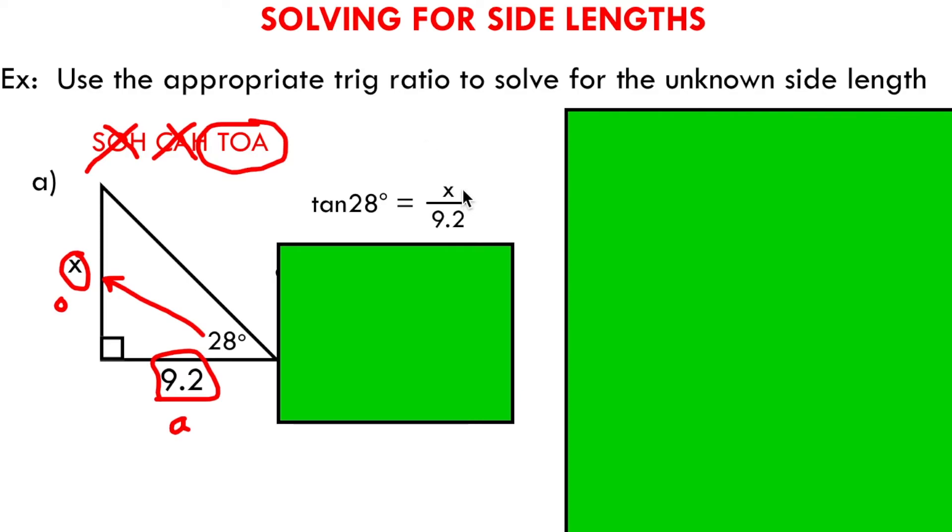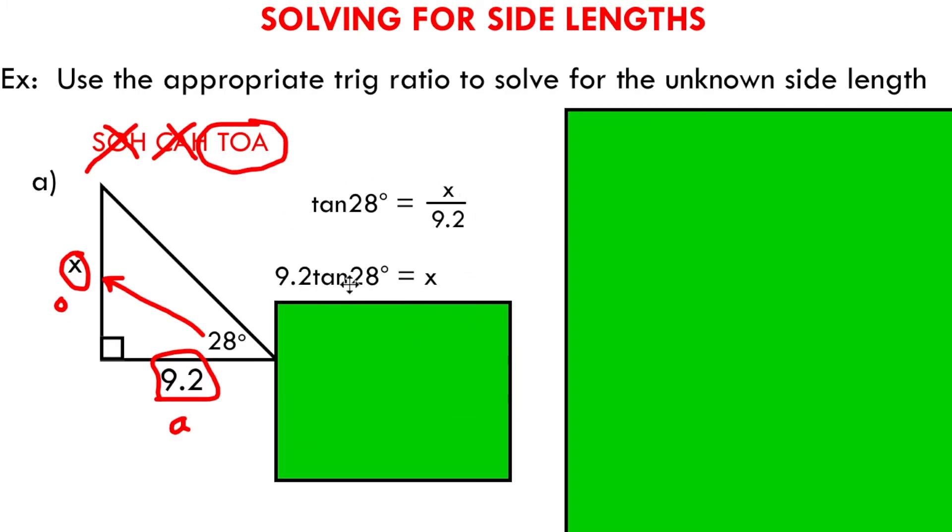Now in order to solve for x, all I need to do is apply a little bit of simple algebra. On the right side, I have x divided by 9.2. If I want to get rid of that 9.2, I can just multiply both sides of this equation by 9.2, and doing that will help me isolate x. At this point, I have a new expression 9.2 times the tan of 28. What you want to do at this point is grab your scientific calculator, and most calculators you can just input this expression exactly how you see it, and that's gonna spit out a nice answer of 4.89 for x. So we've successfully applied the tan ratio here to solve for this unknown side length.